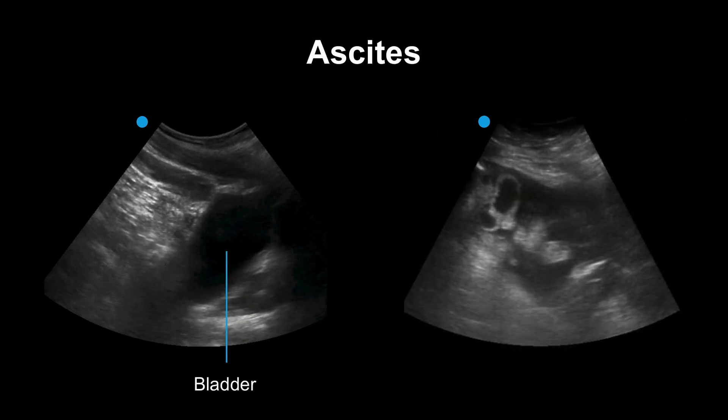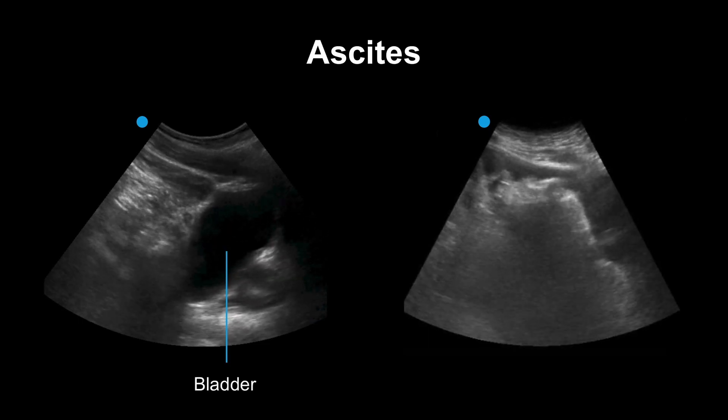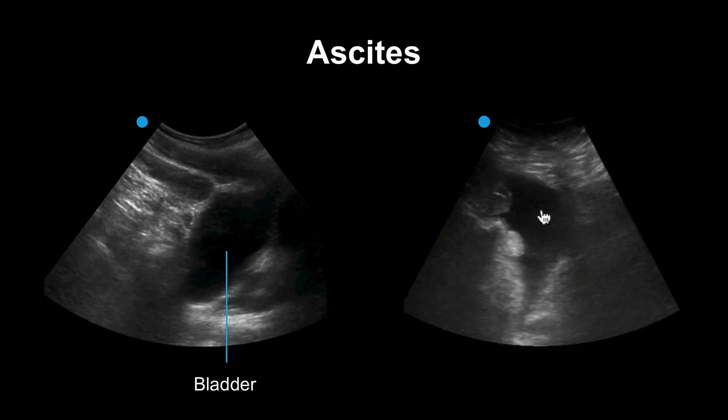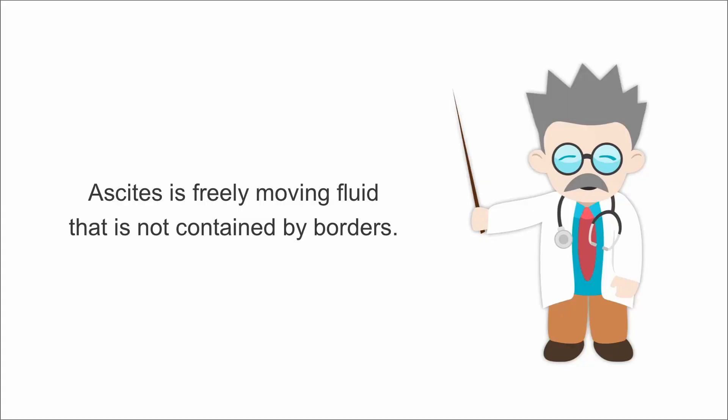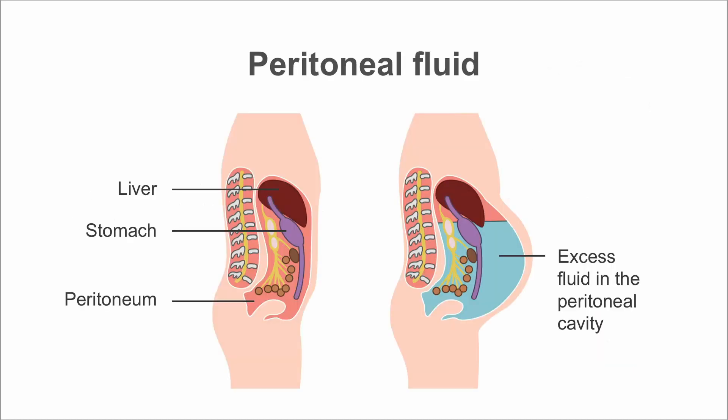Here is the bladder to the left and ascites to the right. It can be really hard to tell the difference. One easy way to remember is that ascites and other free fluid in the abdomen are not bound by specific borders. This means the fluid will have sharp edges and appear more like a crescent than round, because the fluid is surrounding other structures and filling crevices. Unlike fluids seen in vessels or the bladder that have contained borders, ascites fills potential spaces in the abdomen and pelvis.